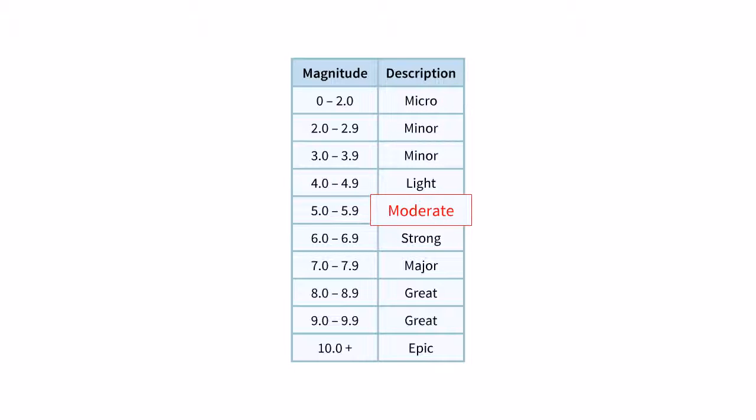Moderate earthquakes measure between 5.0 and 5.9 on the Richter scale. Major earthquakes measuring more than 7.0 can cause significant damage.